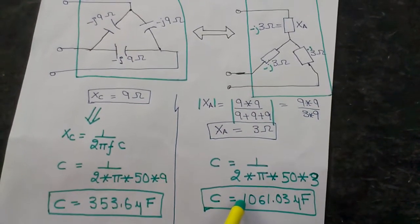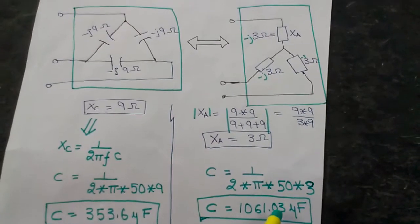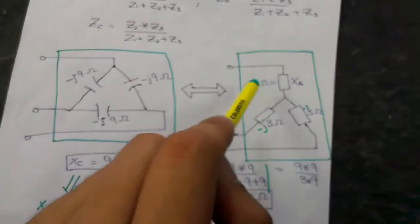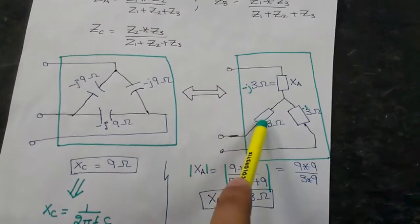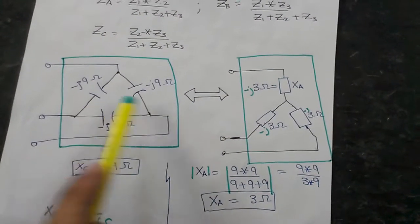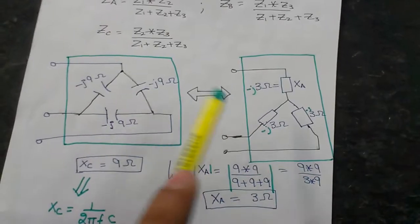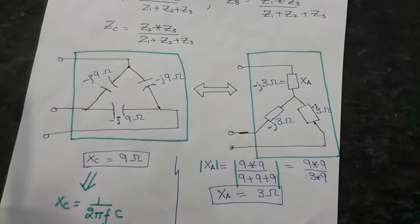That is, if you put the three capacitors in star configuration of 1061.03 microfarad and take the three terminals out and put this one also in a black box, you cannot differentiate these two black boxes in terms of the reactive power they are going to provide.